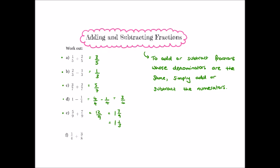Now let's introduce a sixth question. This time we want to evaluate one quarter plus three eighths. The denominators are not equal — we have four as the denominator of our first fraction and eight as the denominator of our second. So what do we need to do?